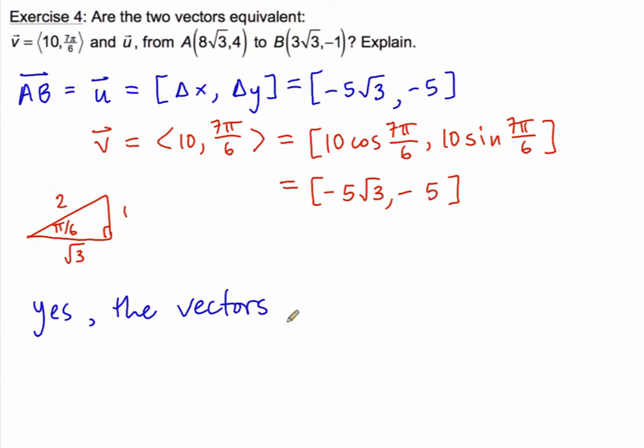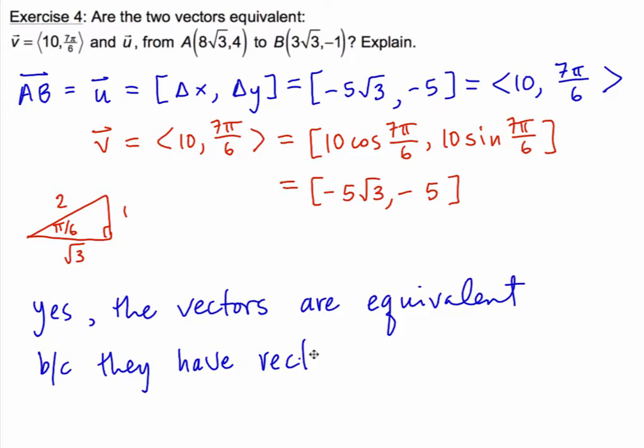Now we could also get the polar components of the blue vector which would involve using the different equations to work backwards from given the rectangular to the polar and to do that you would use Pythagorean theorem to get the magnitude is 10 and then you would notice that we have an angle in quadrant 3. Similarly after getting the reference angle pi by 6 we would find that the actual angle in standard position is 7 pi by 6. So the reason we have equivalent vectors is because they have the same rectangular and therefore the same polar components.